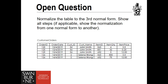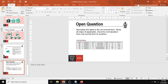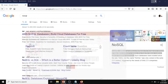The open question asks you to normalize a table to the third normal form, showing each step. You need to show the normalization from first normal form to second normal form, and then to third normal form. That's all for this week — enjoy the slides, answer the open question in Canvas, and don't forget to complete the lab assessment.